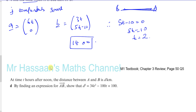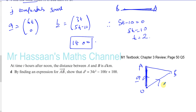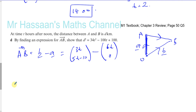For part D, at time t hours after noon the distance between A and B is d kilometres. We need to find the vector from A to B, which is B minus A. So that's (3t, 5t minus 10) minus (6t, 0), giving the vector from A to B as (-3t) i plus (5t minus 10) j.